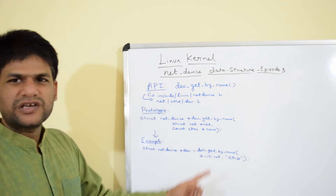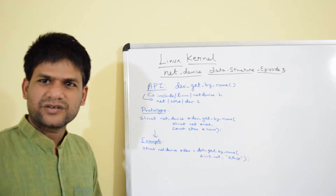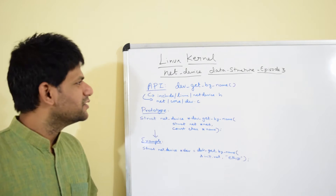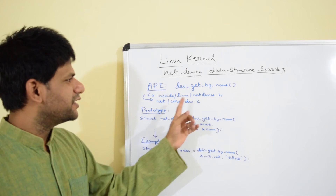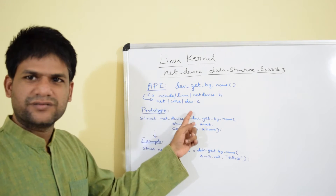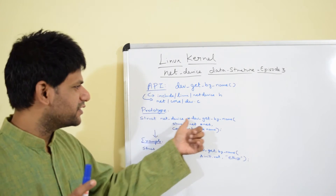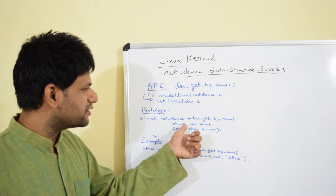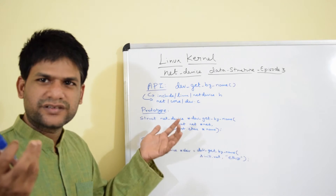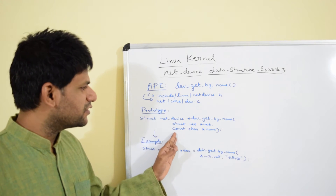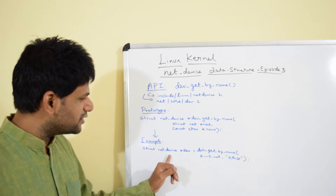From this instance you can derive the interface index, hardware address, or anything related to that port. Let's discuss where exactly this API is defined, its prototype, and parameters before we hop on to the desktop for the live demo. This API is defined in `include/linux/netdevice.h` for its prototype, and its source code is in `net/core/dev.c`. It returns a pointer to struct net_device and takes two parameters: a struct net pointer and the interface name as a const char buffer.